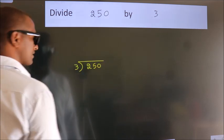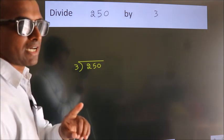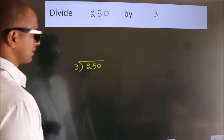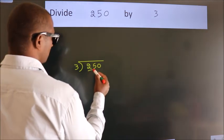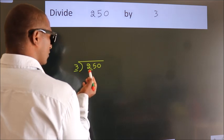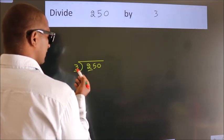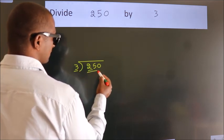This is step 1. Next, here we have 2, here 3. 2 is smaller than 3, so we should take 2 numbers: 25.